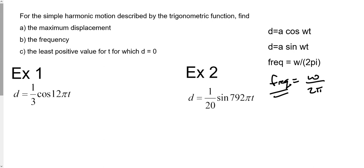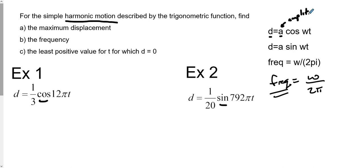What we have here is an example of a trig application problem dealing with harmonic motion. Harmonic motion is talking about waves that come in cosine or sine waves. D refers to the distance the wave travels, A refers to the displacement from the midline or line of oscillation to the peak or valley — really the amplitude. W refers to a part of the frequency, also known as our B value, and T is our input, known as time.